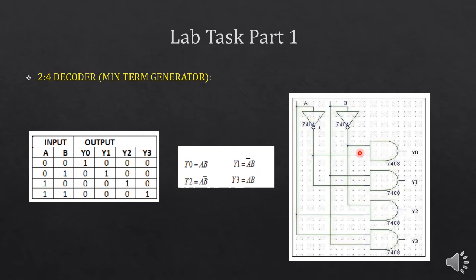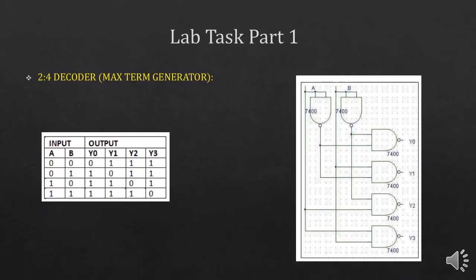This is the circuit of a 2-to-4 line decoder. This is a minterm generator decoder, so this circuit is implemented using NOT and AND gates only, using these equations. If you want to use a maxterm generator, the output is indicated by logic 0. When the input is 0-0, Y0 is 0 — here 0 represents logic HIGH as it is a maxterm generator. Similarly on 0-1, Y1 is 0 and so on. You can derive this equation and implement this circuit using NAND gates only.